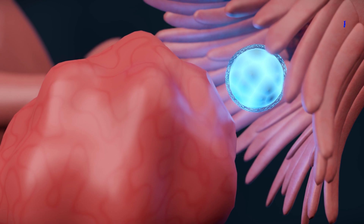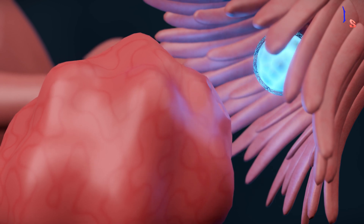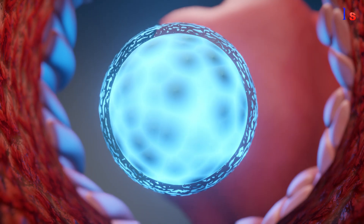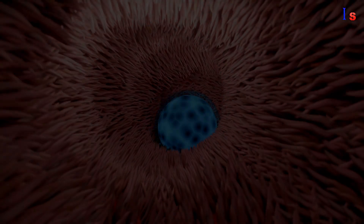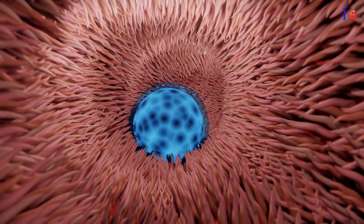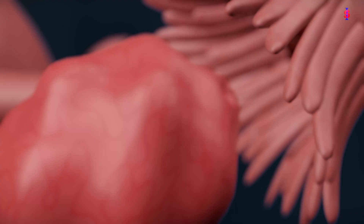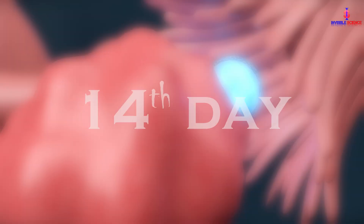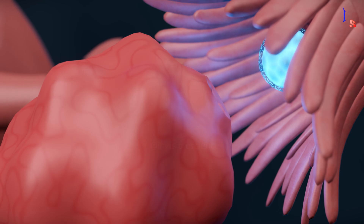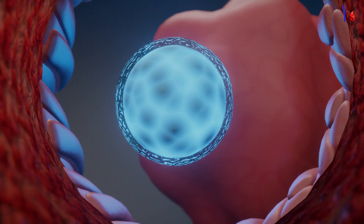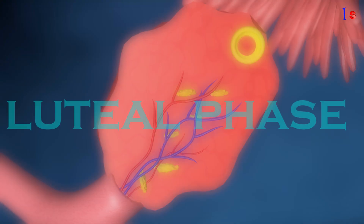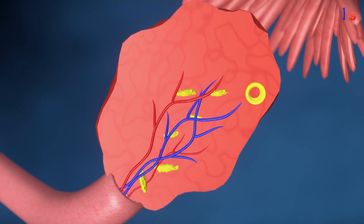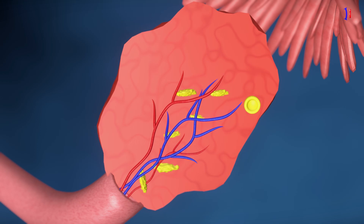Ovulation is the crucial phase in the menstrual cycle. It occurs when the dominant follicle ruptures, releasing a mature egg into the fallopian tube. The egg is then available for fertilization by sperm. Ovulation usually happens around the 14th day of the 28-day cycle.